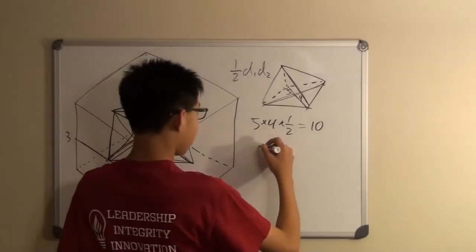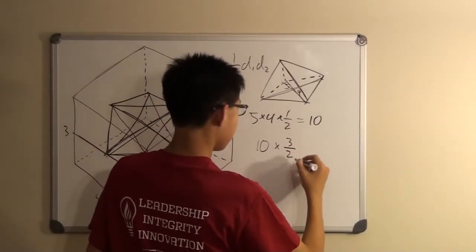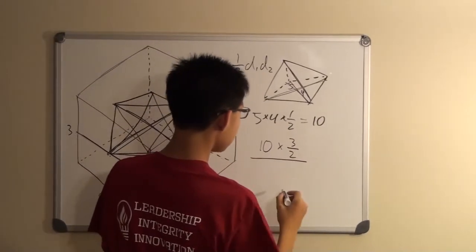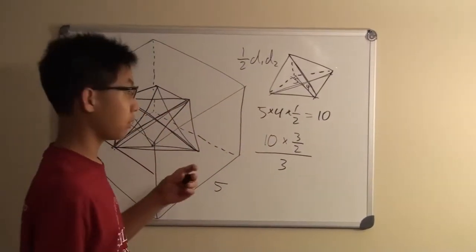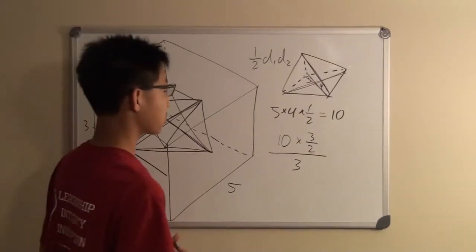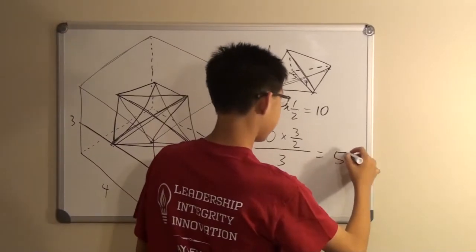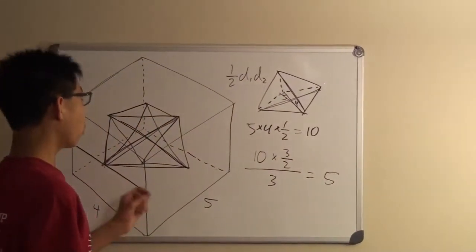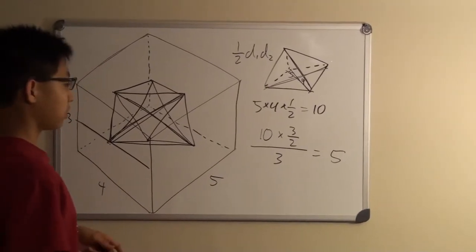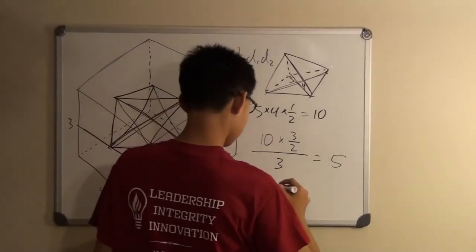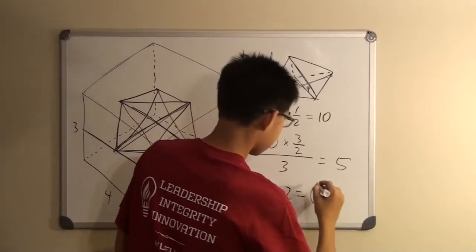So now we take the base times the height, 3 over 2, and then we take all of this and divide by 3, since that's how the formula for a pyramid works. So this would give us 5. So the volume for one pyramid is 5, and since we have two of them, that means we have to multiply it by 2. This would give us 10 as our final answer.